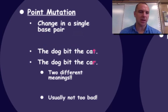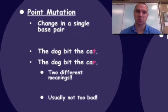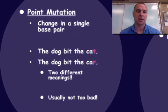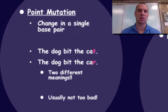Point mutations are usually not too bad. For example, take the sentence 'The dog bit the cat' — I use three-letter words because three letters make a codon, so this represents codons. If I change one letter in the sentence, it changes to 'the dog bit the car.' It doesn't change the sentence a lot — you still get the overall effect that the dog is biting something. So usually these point mutations are not too bad. A lot of us probably have point mutations in our body right now and we really don't see any effect from it.